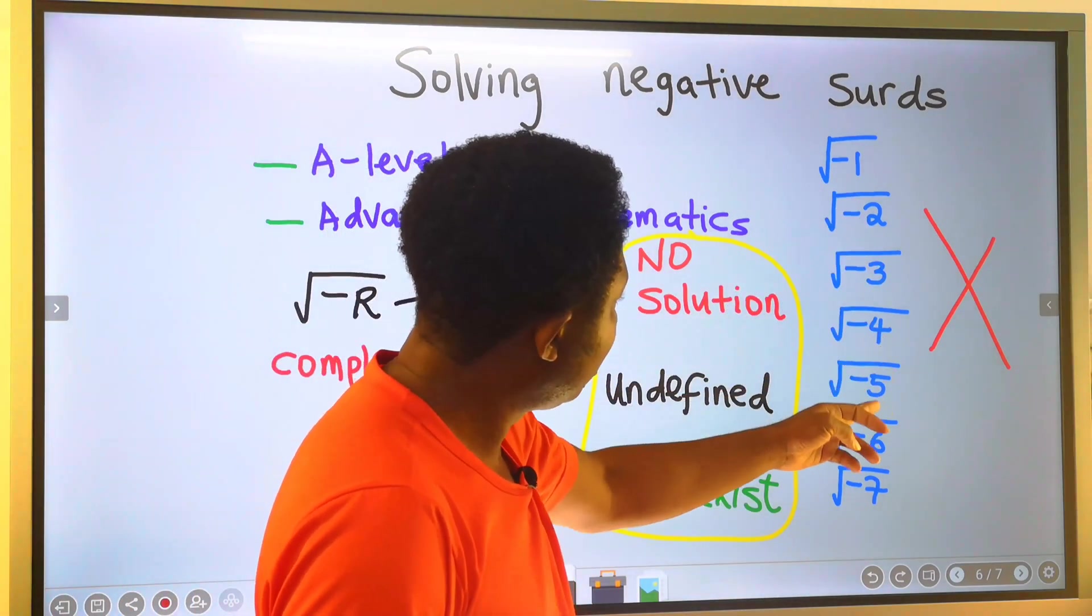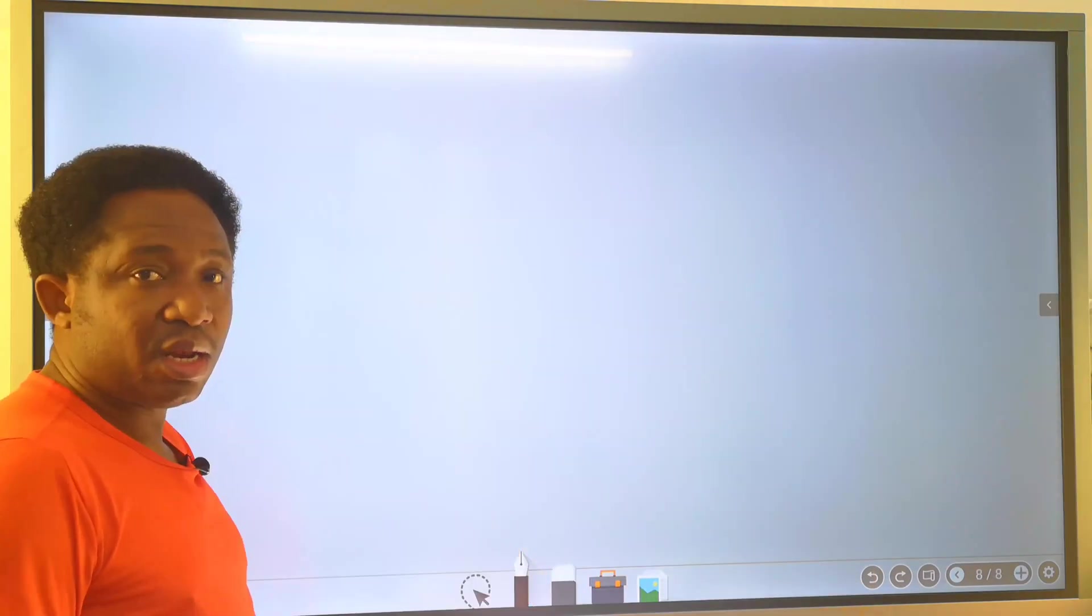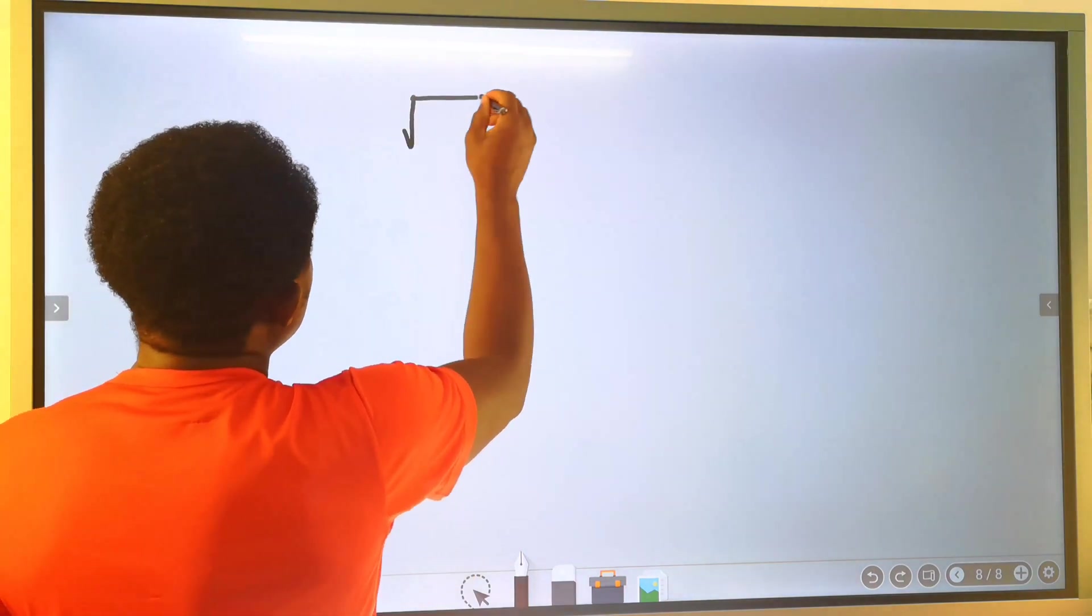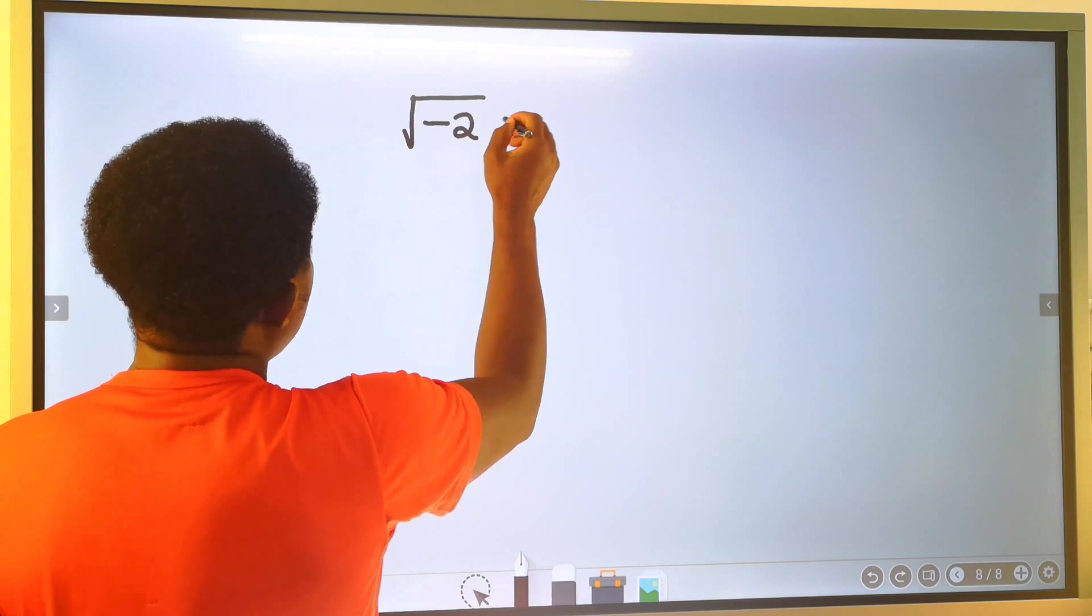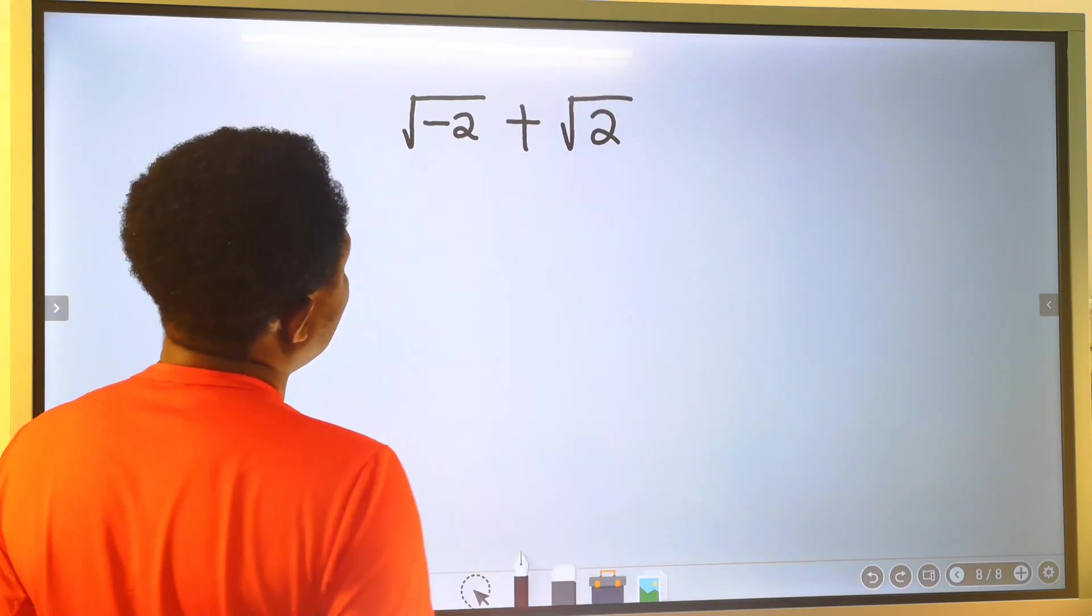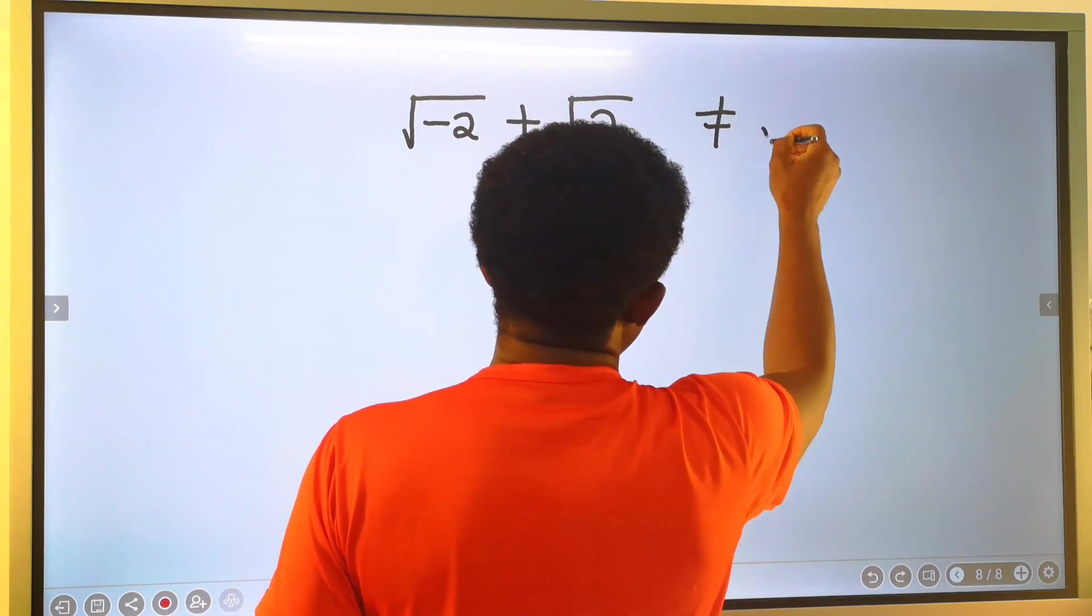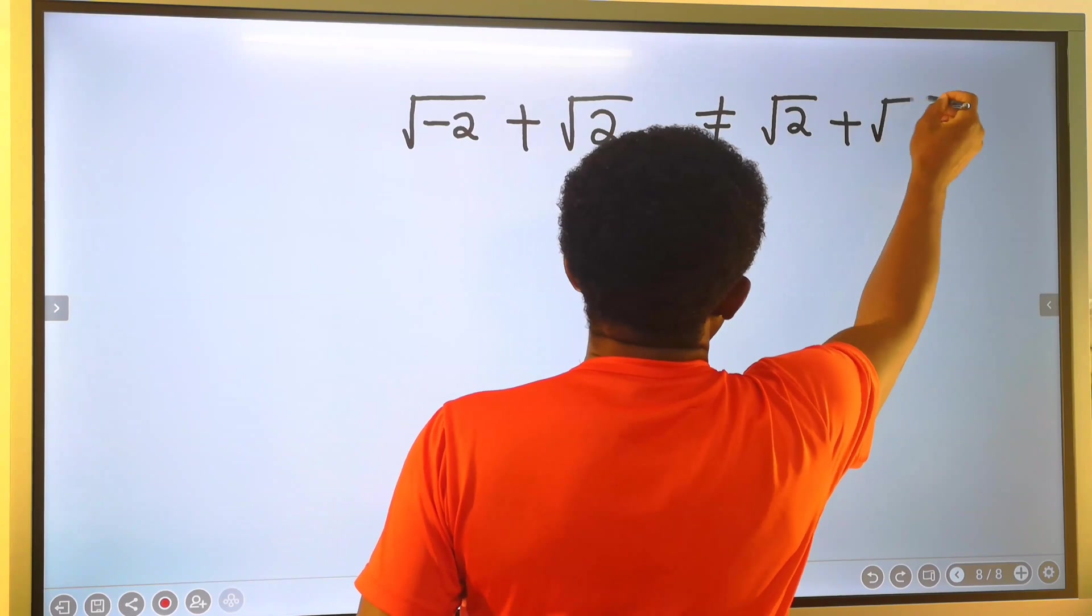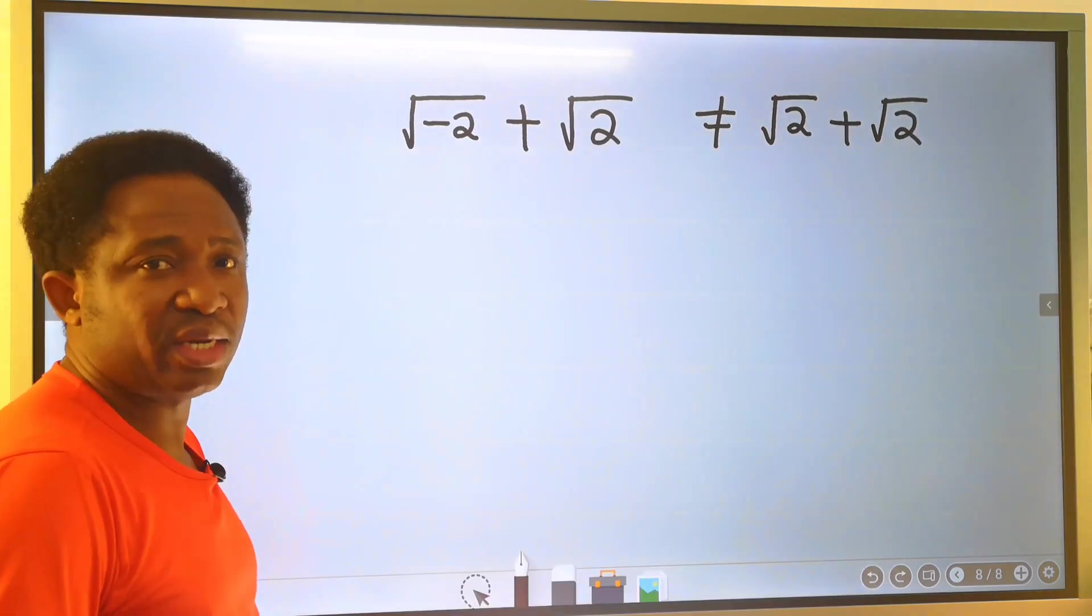Likewise, it's important to mention here that the square root of minus two plus the square root of two is not the same as the square root of two plus the square root of two when dealing with surds.